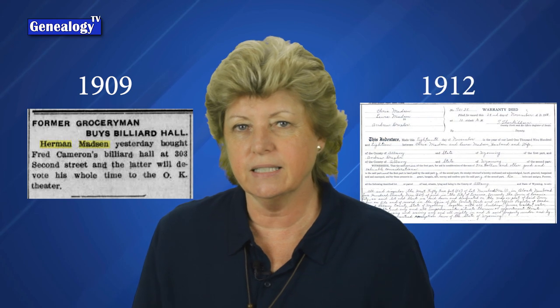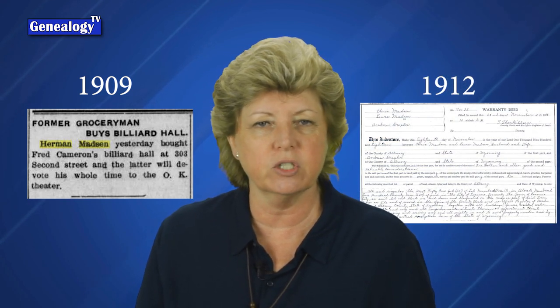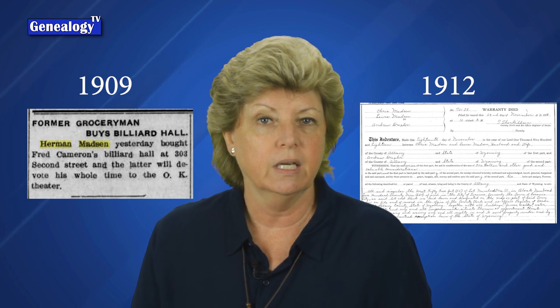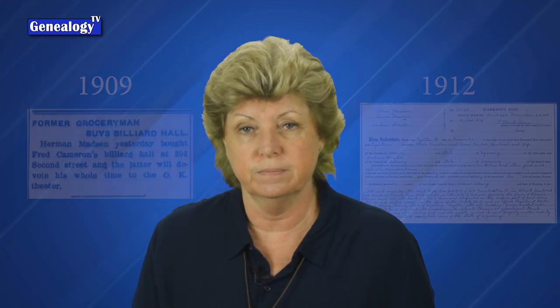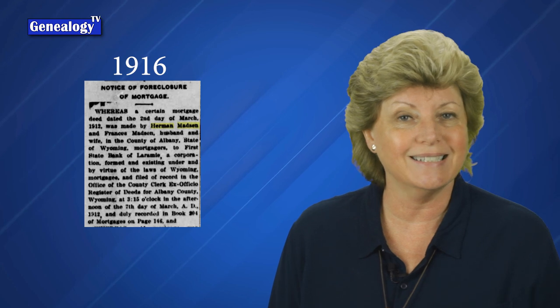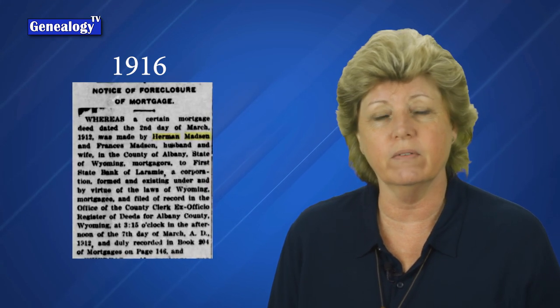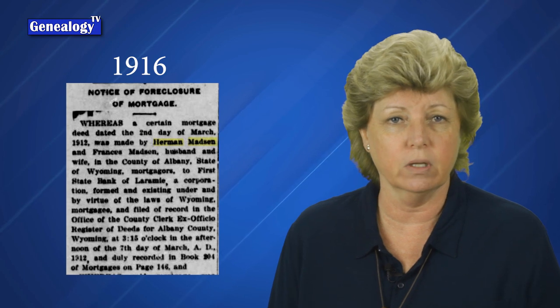In this newspaper article we find Herman Madsen and Chris Madsen together regarding the grocery store. This ties the article together with the father and son as stakeholders in the store as well as an alternate spelling of Christopher. In 1909 Herman Madsen bought a pool hall, and in 1912 he later traded that pool hall for a ranch in the country outside of Laramie — he was chasing his dream of becoming a rancher. Sadly in 1916 Herman and Frances could not make a go of it with the ranch, so it went into foreclosure.